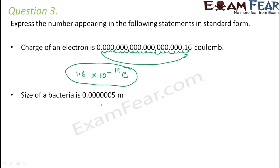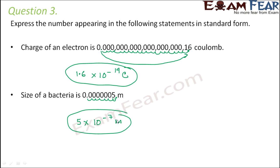The size of a bacteria is 0.00000005 m. For standard form, the number between 1 and 10 is 5, so shift the decimal point: 1, 2, 3, 4, 5, 6, 7 jumps — giving 5 into 10 to the power minus 7 meters. Note: writing 0.5 into 10 to the power minus 6 gives the same value but is NOT standard form, because 0.5 does not lie between 1 and 10.